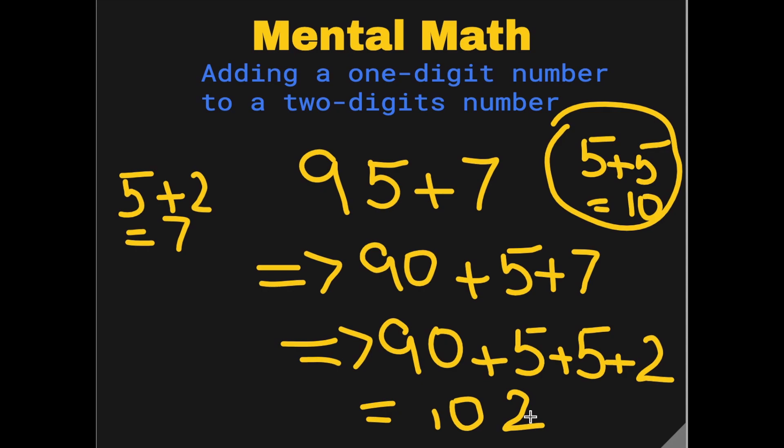But we will be doing all of this in our brain, and we just need to remember that 5 plus 5 is 10 and 5 plus 2 is 7.